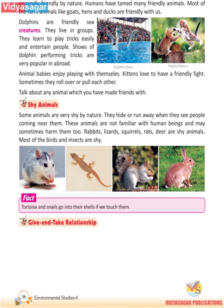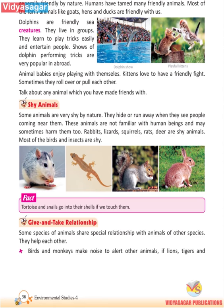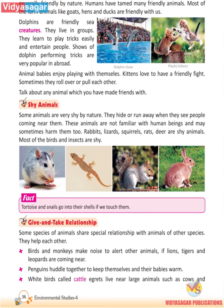Give and Take Relationship. Some species of animals share a special relationship with animals of other species and help each other. Birds and monkeys make noise to alert other animals if lions, tigers and leopards are coming near. Penguins huddle together to keep themselves and their babies warm. White birds called cattle egrets live near large animals such as cows, buffaloes, elephants and deer because they eat the insects that are associated with the cattle.